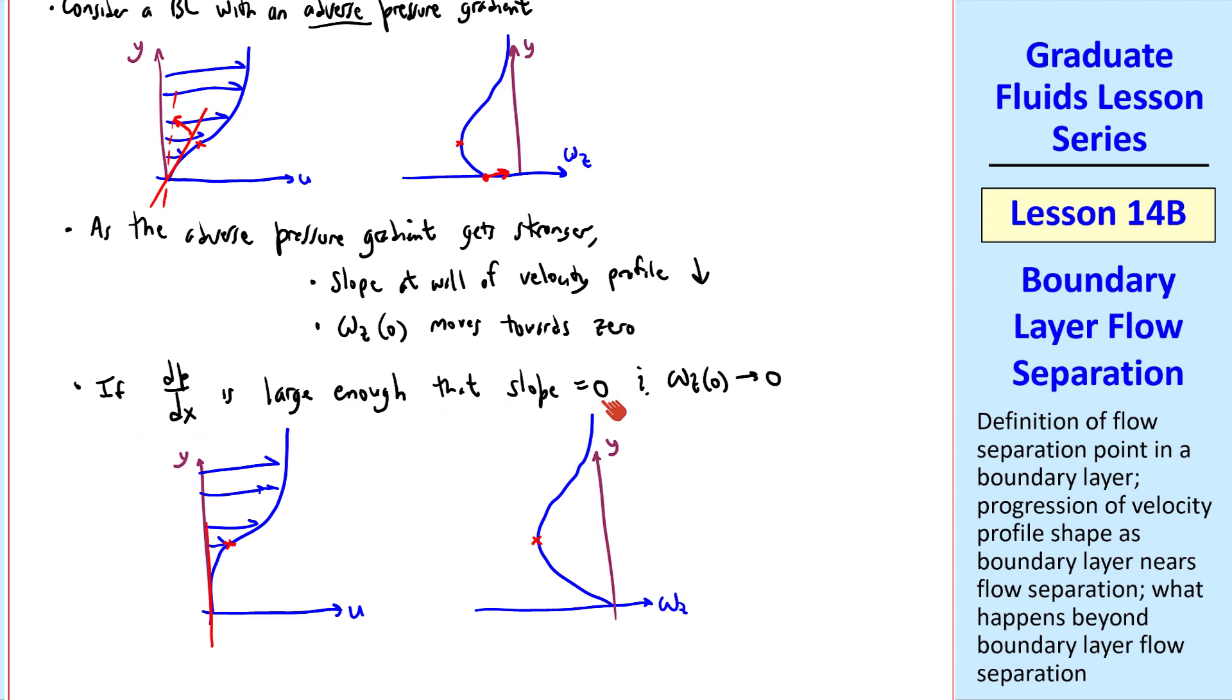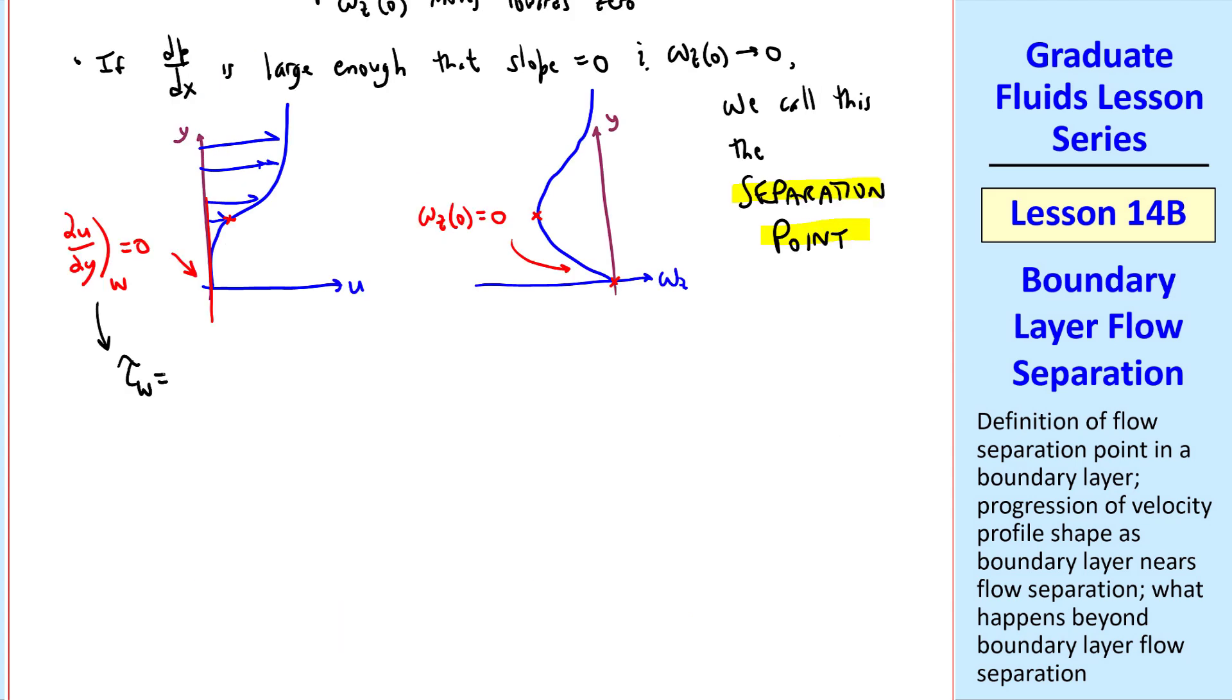So continuing our sentence here, if this happens, we call this the separation point, where del u del y at the wall is 0, 0 slope, and omega z at the wall is 0. Note also that since tau w is mu del u del y at the wall, tau w is also 0.